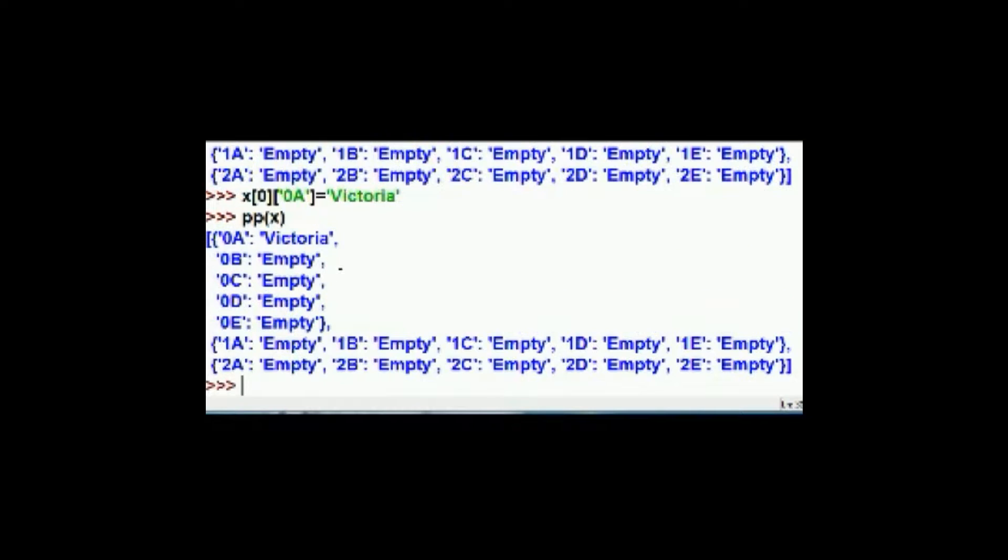Now what does this look like? Oh, there she is. Victoria is in seat 0A of the 0th row. What about me? I want to sit next to Victoria right there. So what do we do? Well, dollars to donuts. It's pretty easy to do this.